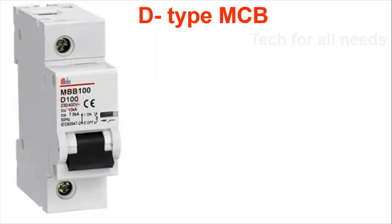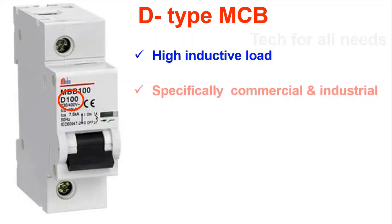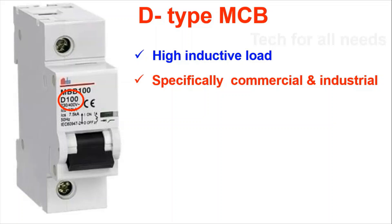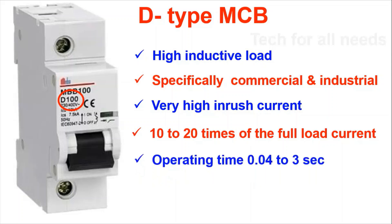D type MCB is used for high inductive loads such as windings and coils, for commercial and industrial purposes. It has a very high inrush current range of 10 to 20 times full load current, with an operating time of 0.04 to 3 seconds. It is used for large winding motors and transformers, including X-ray machines.